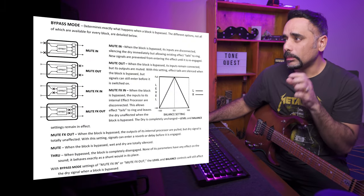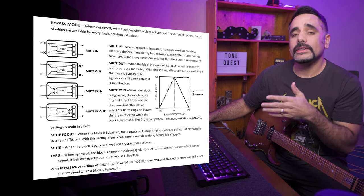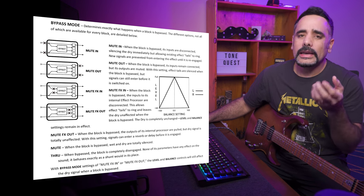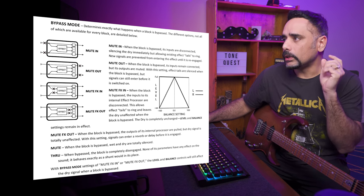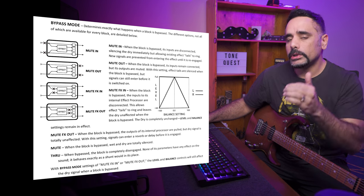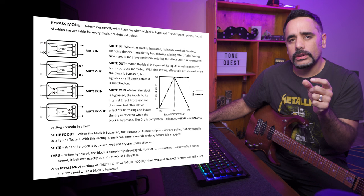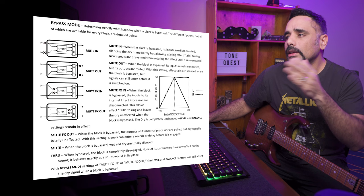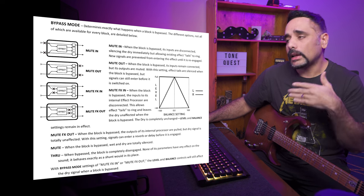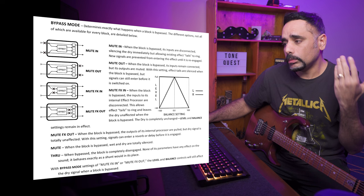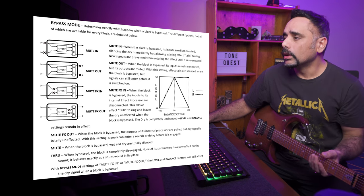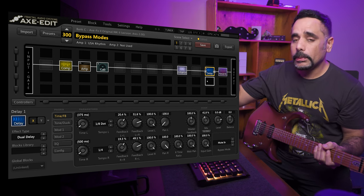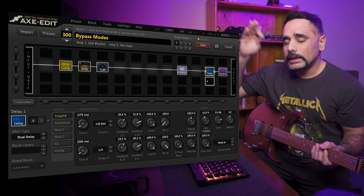So, Mute In — what does it mean? When the block is bypassed, its inputs are disconnected, silencing the dry immediately but allowing the existing effect tails to ring out. New signals are prevented from entering the effect until it is re-engaged. In layman's terms, it disconnects all inputs coming into the block the moment it's bypassed, but the tail of the delay — or whatever effect is in use — will still be heard. So I'm going to play a note and then bypass it, and you'll hear the tail of the delay still ring out.